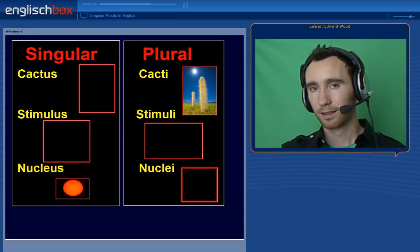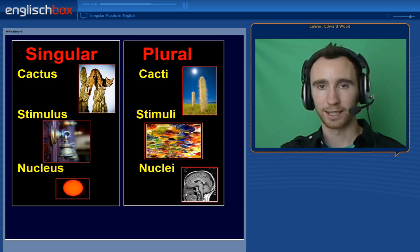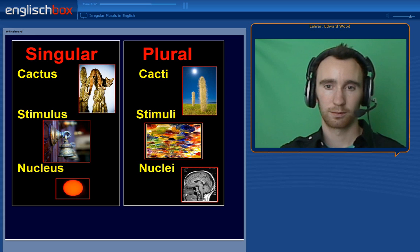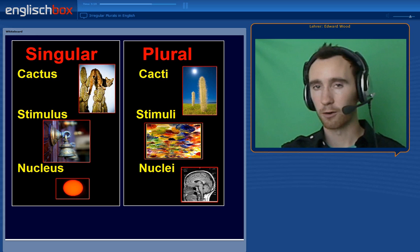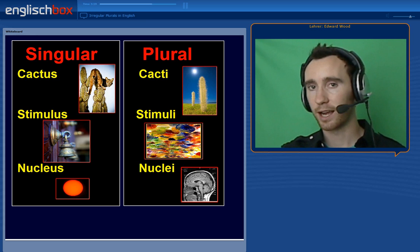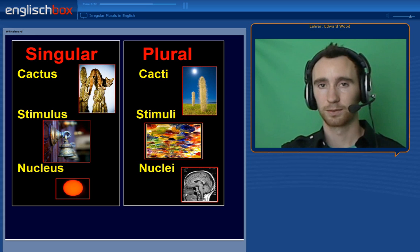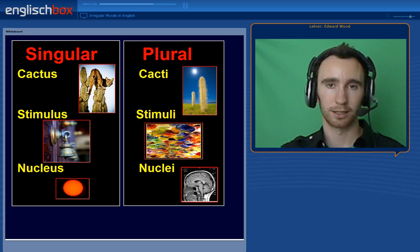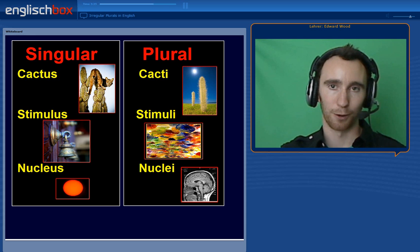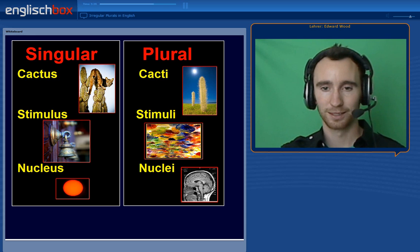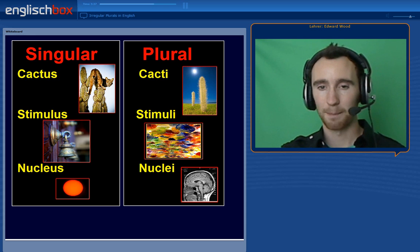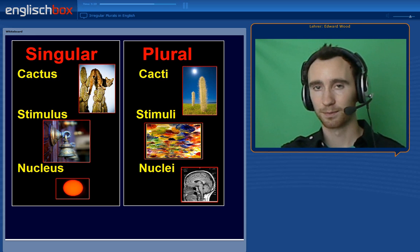Then we have one cactus, and there are many cacti in the desert. One stimulus — such as the bell, which was the stimulus in the famous Pavlov experiment — and many stimuli.